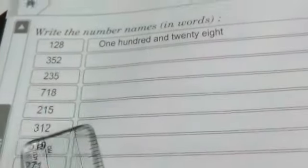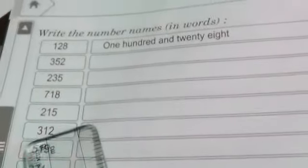Two hundred and fifteen. So you have to write two hundred and fifteen. Three hundred and twelve. Five hundred and nineteen.